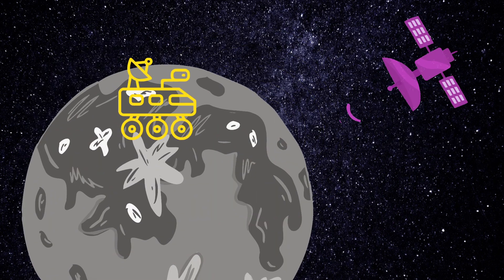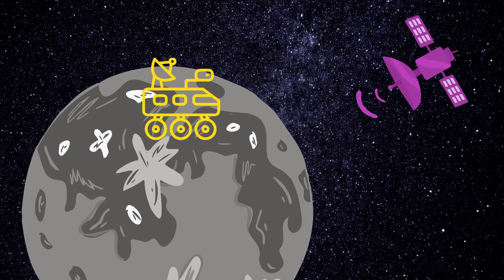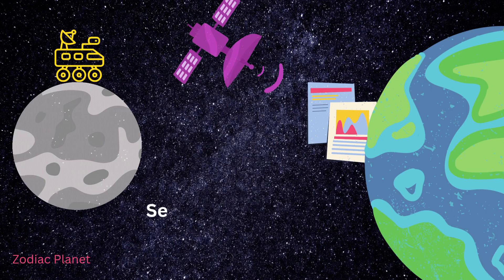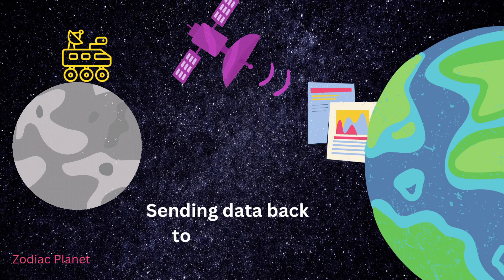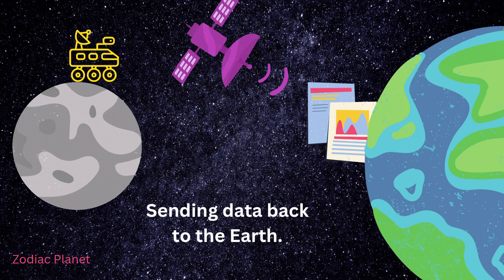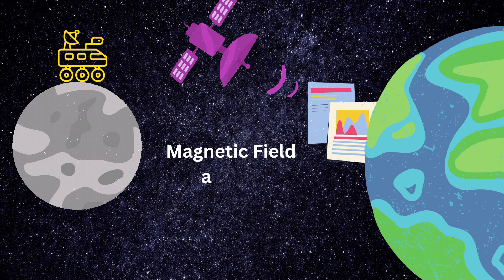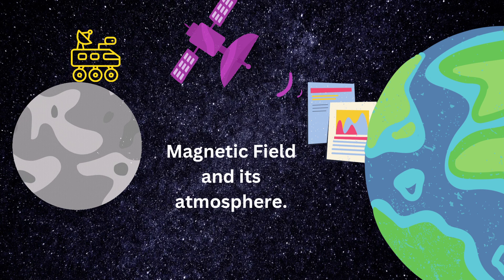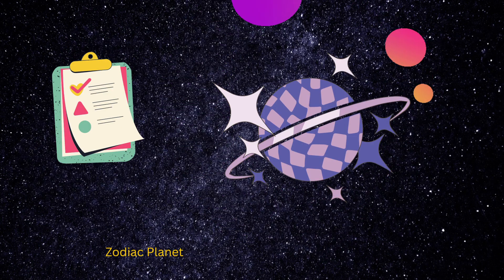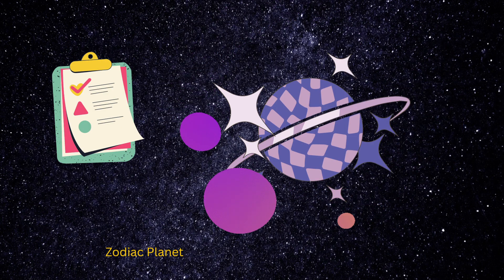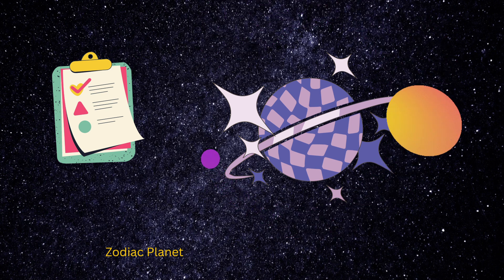The secrets of Mercury have also been discovered by space probes sent to the planet. For example, the Messenger probe provided data on the planet's surface, its magnetic field and its atmosphere. This information has allowed scientists to understand more about the planet's formation and evolution.